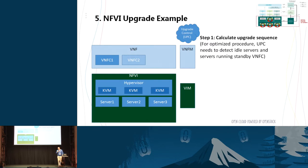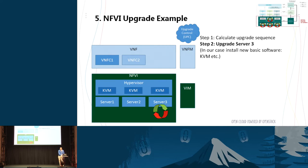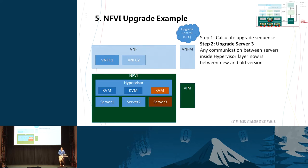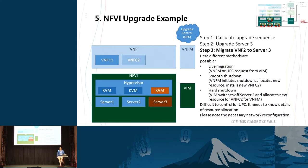First, I calculate my upgrade process and the steps to go through. In this case: first upgrade server three because it's idling, then upgrade server two which only has the standby, then run the upgrade on server one. So first step: upgrade server three — it's idling, so just do it. The next step is a little bit tricky — it's something we don't do today. We don't yet know how to instruct the migration, and there are different mechanisms available.